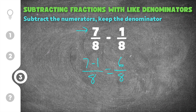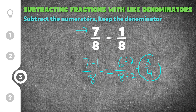Then we check to see if we can reduce. In this case, 6 eighths — both of these are even, so we can reduce by 2. We're going to divide the numerator by 2 and the denominator by 2. When we reduce, we get 6 divided by 2 for the numerator, which is 3. And then 8 divided by 2 for the denominator, which is 4. Our final solution is 3 fourths. So 7 eighths minus 1 eighth is originally 6 eighths, but after you reduce, you'll get 3 fourths.